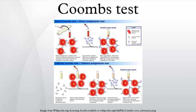The direct Coombs test is used to detect if antibodies or complement system factors have bound to RBC surface antigens in vivo. The DAT is not currently required for pre-transfusion testing but may be included by some laboratories. The direct Coombs test is used clinically when immune-mediated hemolytic anemia is suspected. A positive Coombs test indicates that an immune mechanism is attacking the patient's own RBCs. This mechanism could be autoimmunity, alloimmunity, or a drug-induced immune-mediated mechanism.